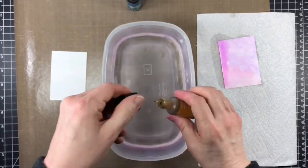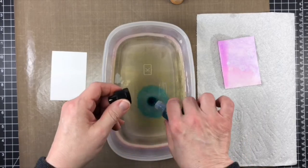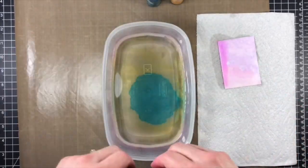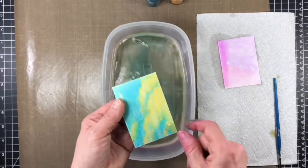I added a couple drops of the ink into my water and quickly submerged my Yupo paper, pulled it out and laid it on a paper towel to dry. I can't even begin to tell you how much I love the butterscotch and stream together.